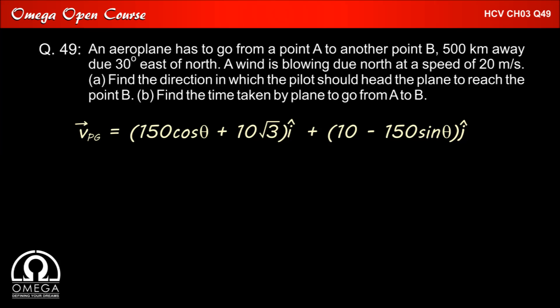And we have seen that 10 - 150 sin theta, the vertical component, must be zero. So the velocity of plane with respect to ground is 150 cos theta + 10√3.